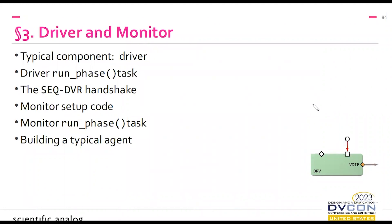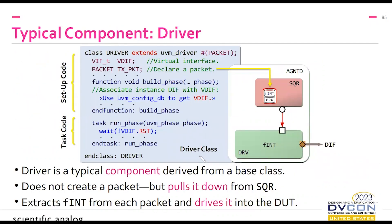That brings us to section three: a closer look at the actual driver and monitor code. I like to think of the driver code as partitioned into setup and then the all-important run phase task. The driver needs the virtual interface bus VDIF, declared as a class variable. During the driver's build phase, we call the static get method on the UVM config DB to make the association between VDIF and DIF, so the driver can in effect access DIF just as if it were connected by a port.